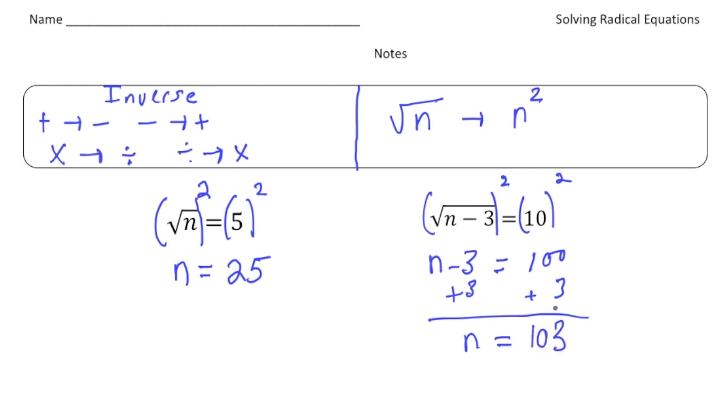And if I plug this number back into the original equation, 103 take away 3 is 100. And the square root of 100 is indeed 10.